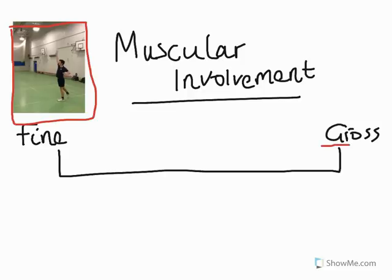First on the list is looking at the muscular involvement of this performance. If we judge this badminton shot as gross, we would expect it to involve large muscle groups, with the activity based on strength and power. Whereas if it is a fine skill, we are considering a more intricate movement based around finesse, touch, or control, with the real emphasis on accuracy and precision. Will Spreadbury's badminton performance is somewhere in the middle of this scale — yes, he is hitting hard using strength, but accuracy on the fine side is also critical.